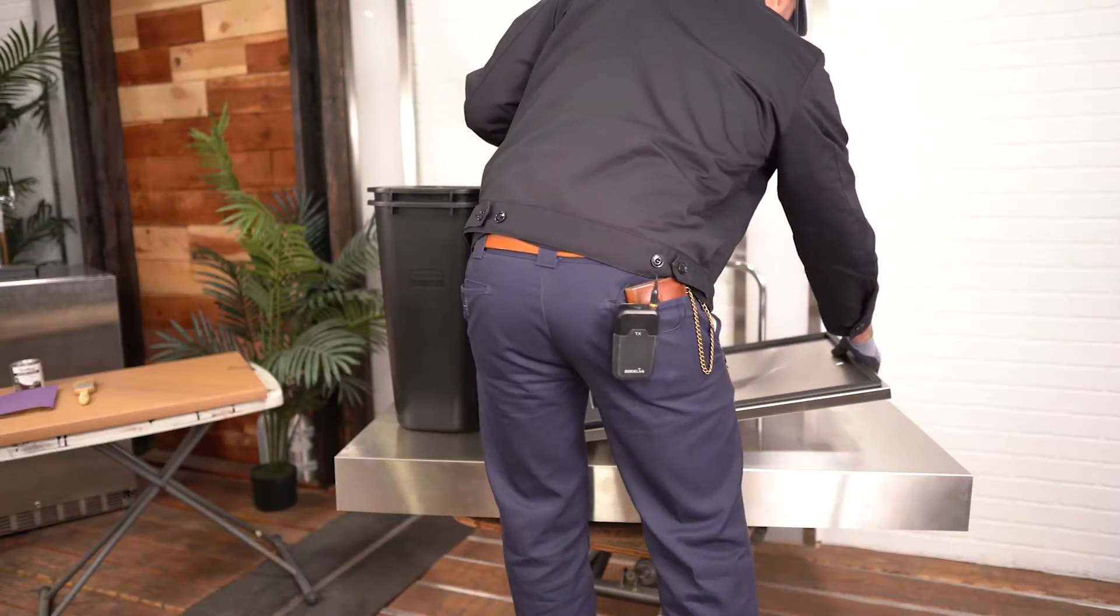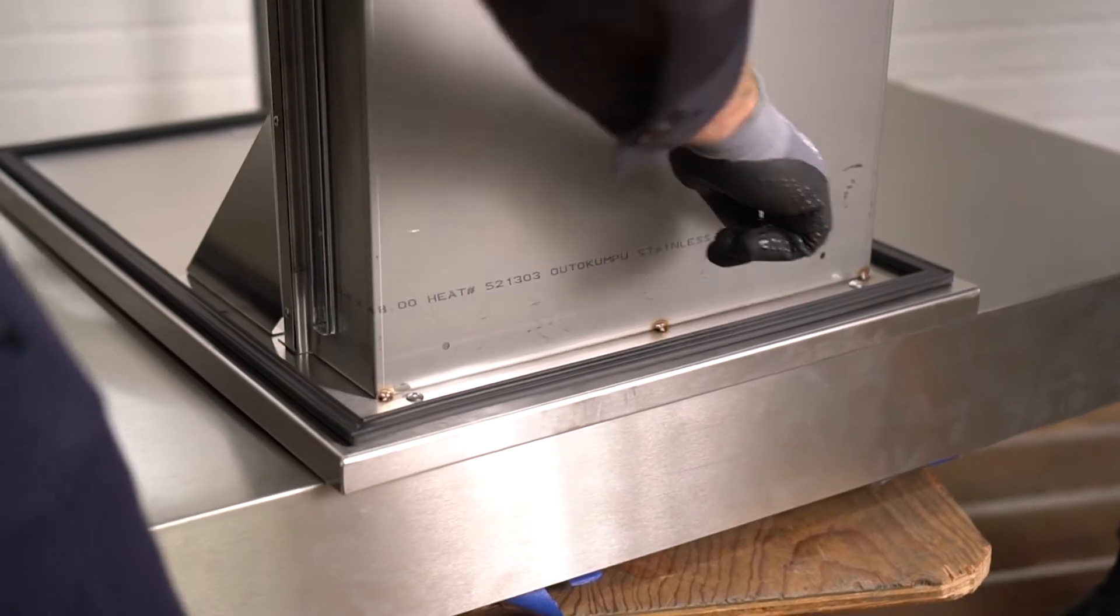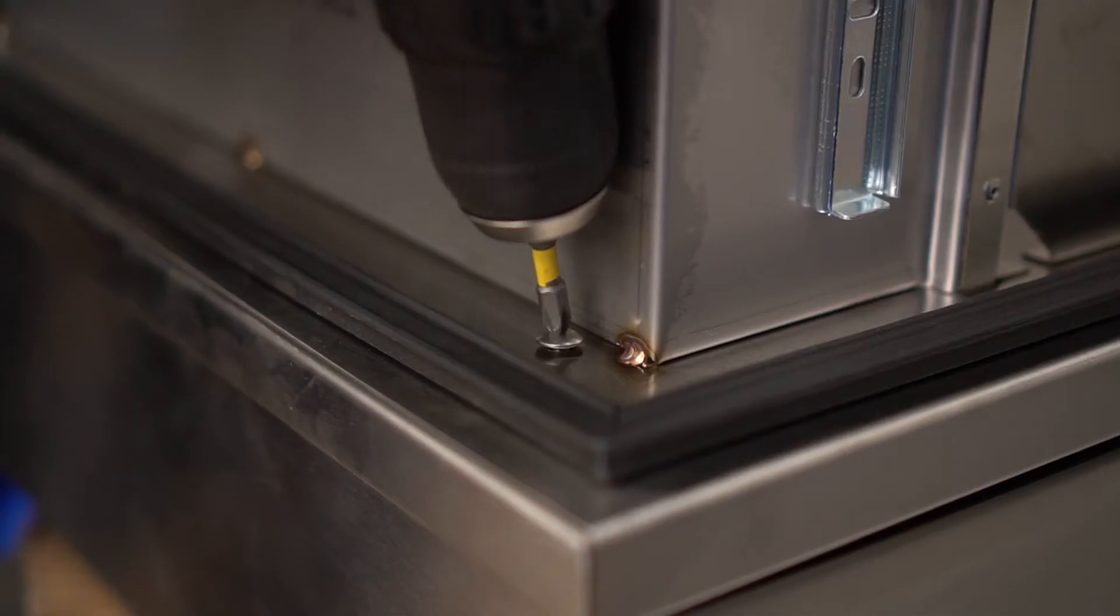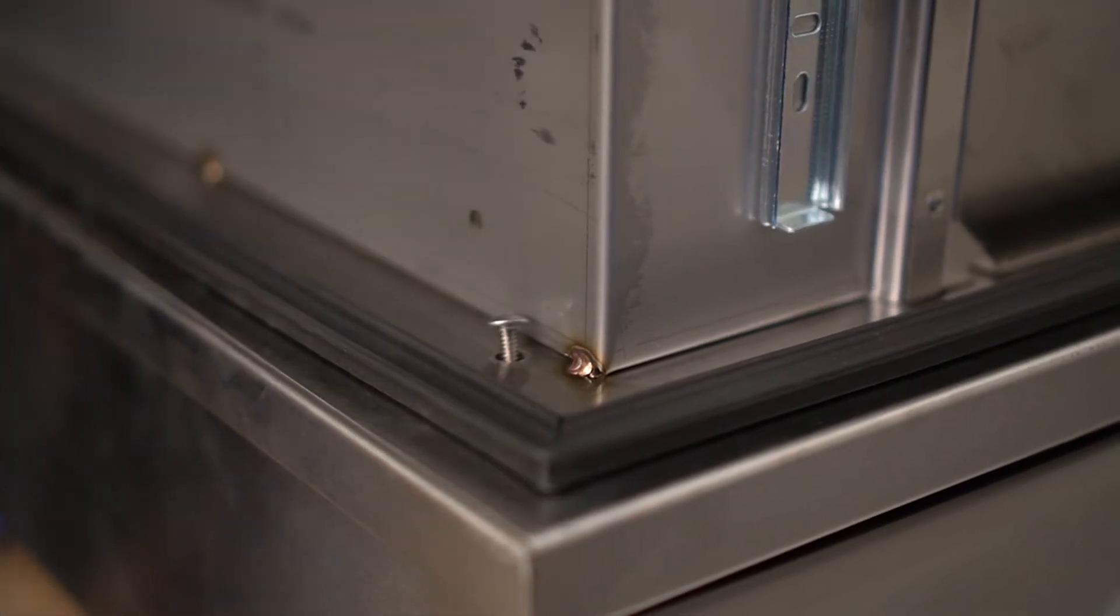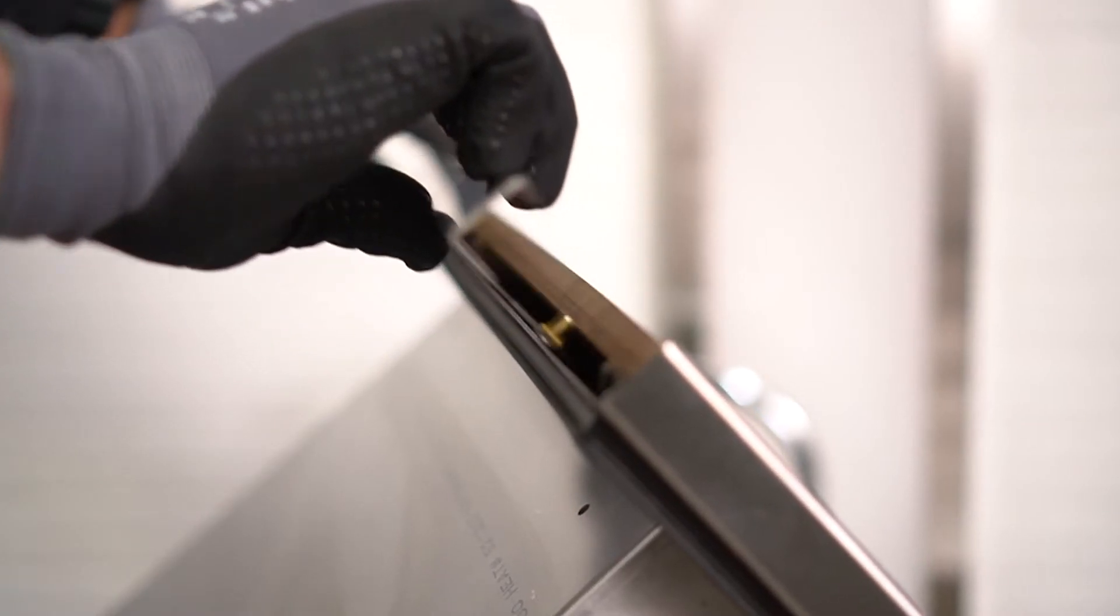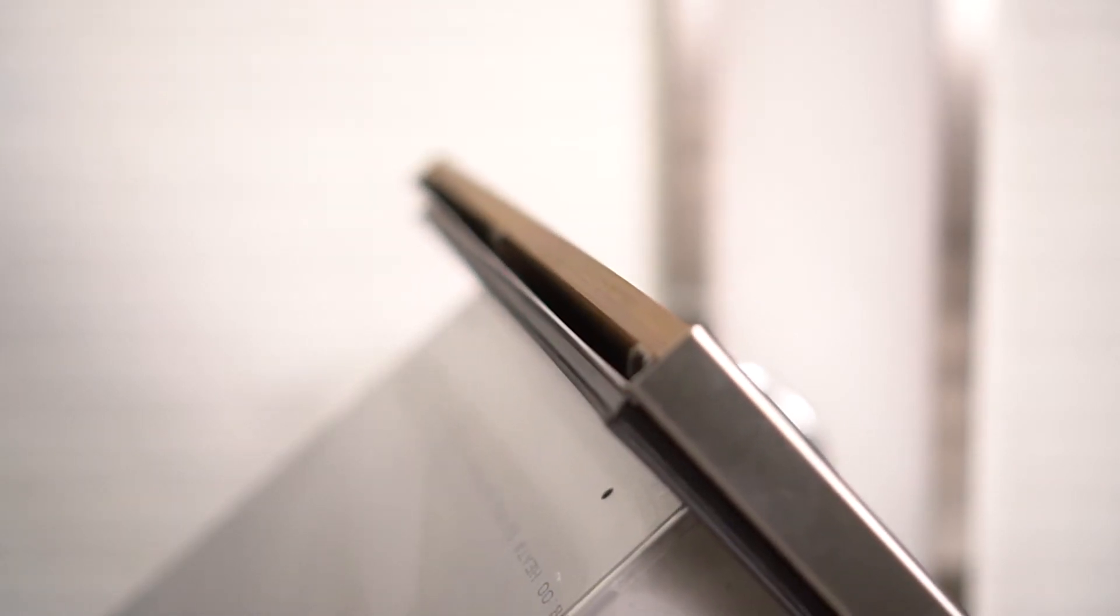Rest it face down on a towel or cloth to avoid damage and locate the two mounting screws on the lower back portion. Remove them. Slide out the bottom portion of the metal flange that is securing the wood and metal slats.